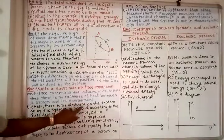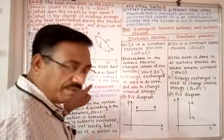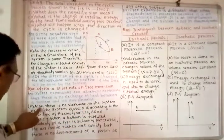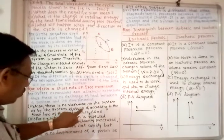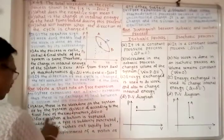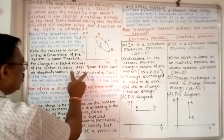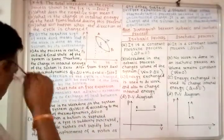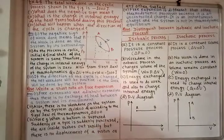Second point: in free expansion, there is no work done on the system by the surrounding, or by the system on the surrounding — work done is zero. If work done is zero, then the quantity of heat supplied is also zero. According to the first law of thermodynamics, the change in internal energy is also zero. So the change in internal energy during free expansion is also zero.